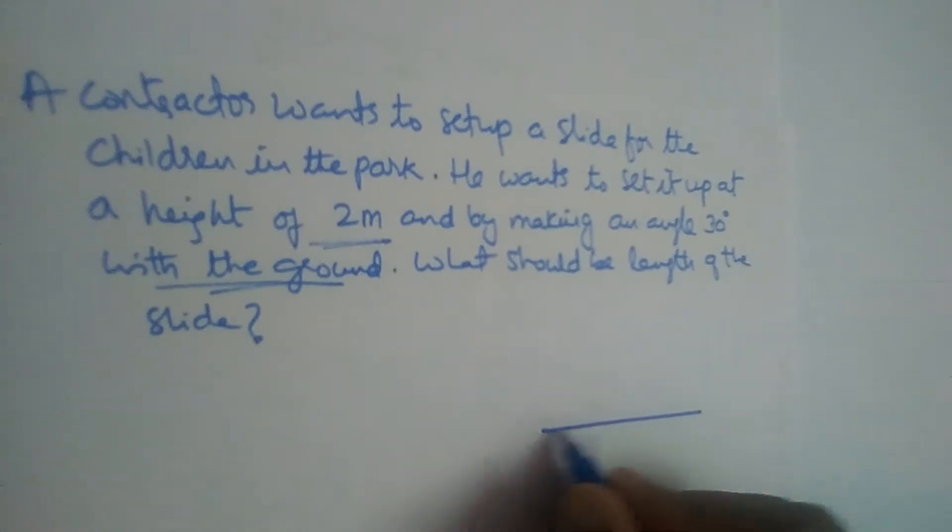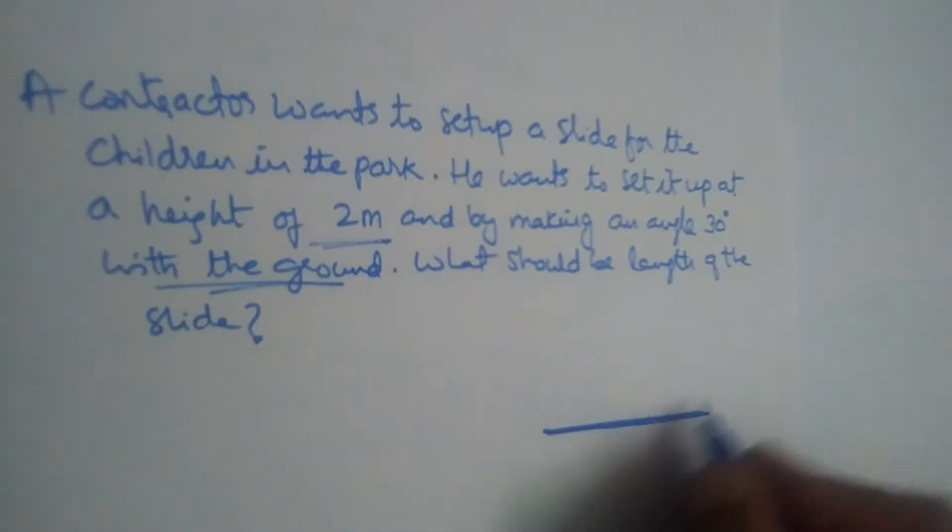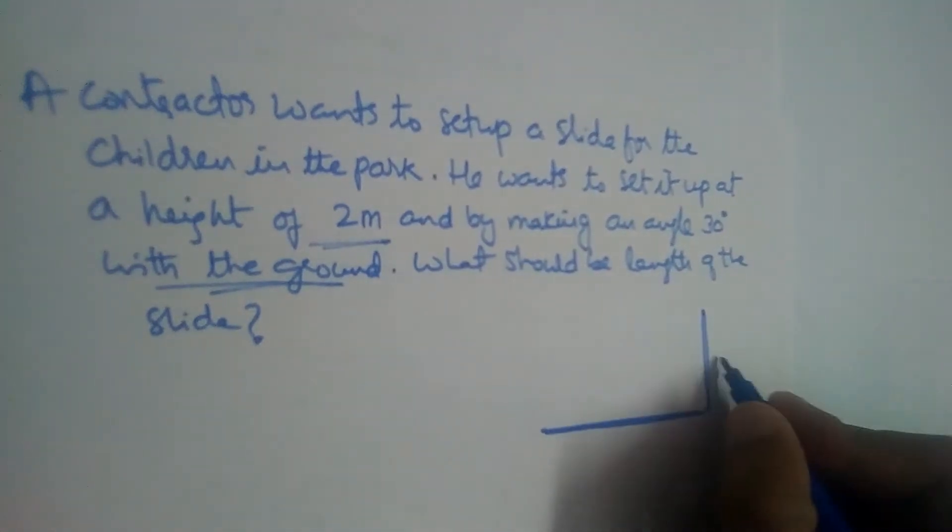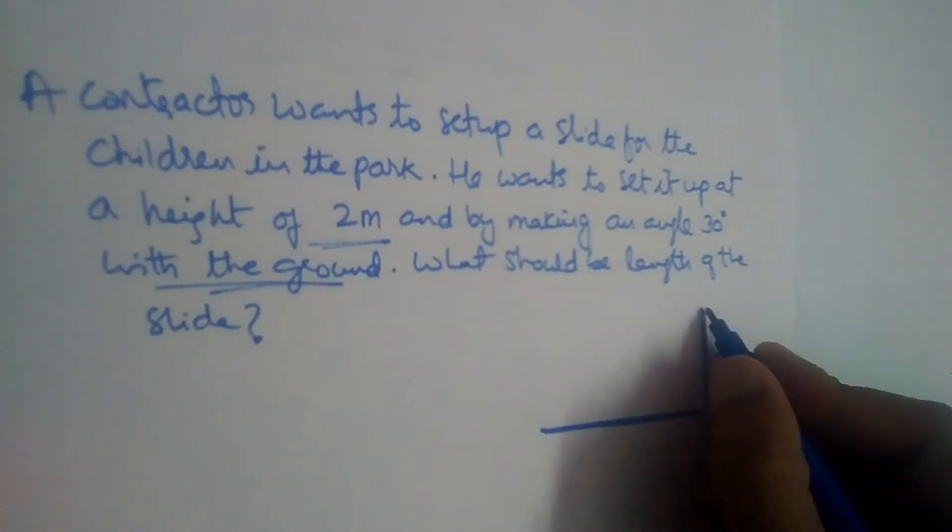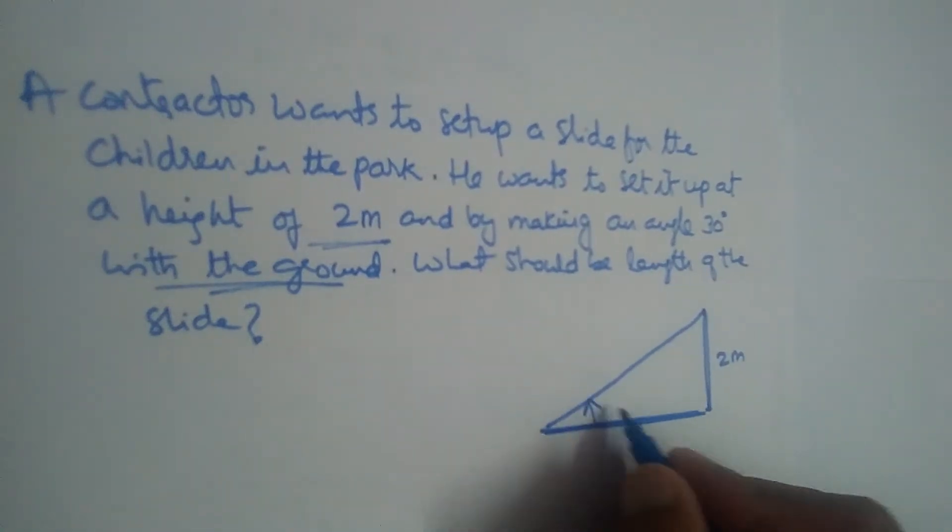So suppose this is the ground. And he wants to set up a slide at a height of 2 meters. So from here, this is the slide. And what is the angle this slide is making with the ground? It is making 30 degrees.